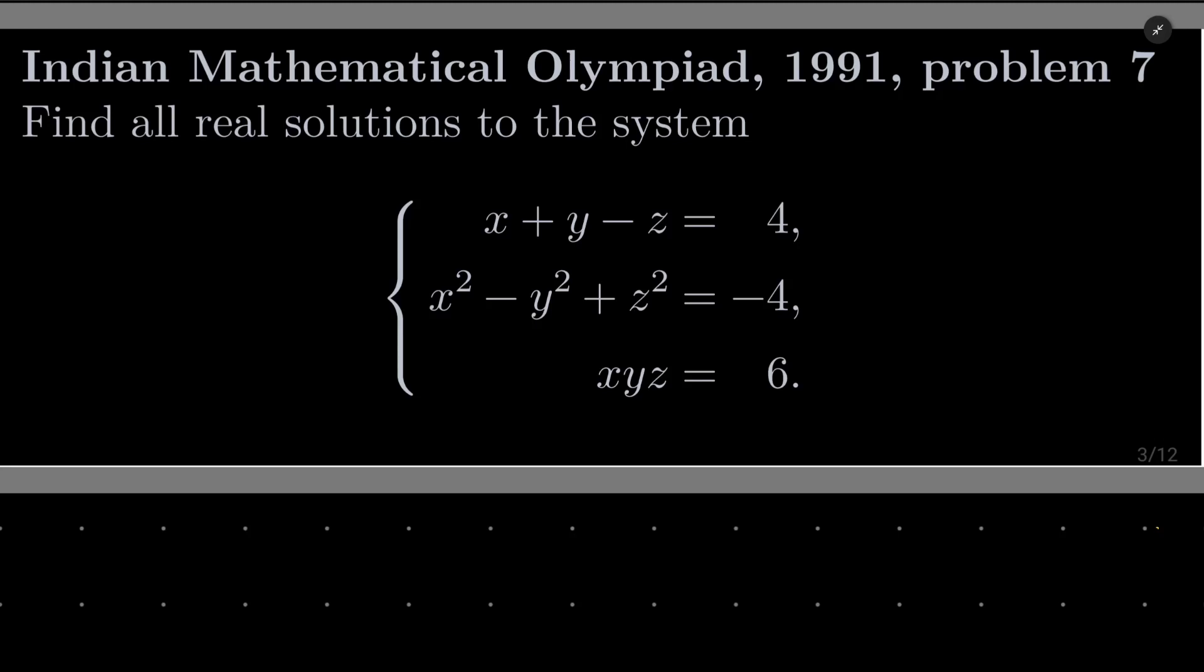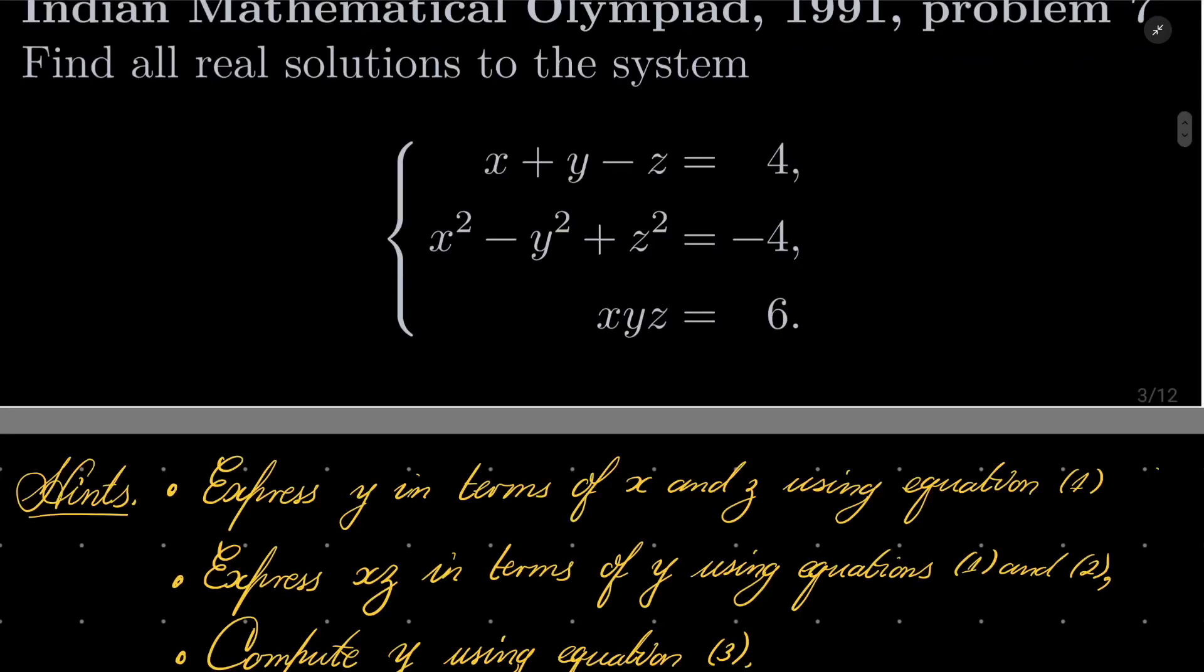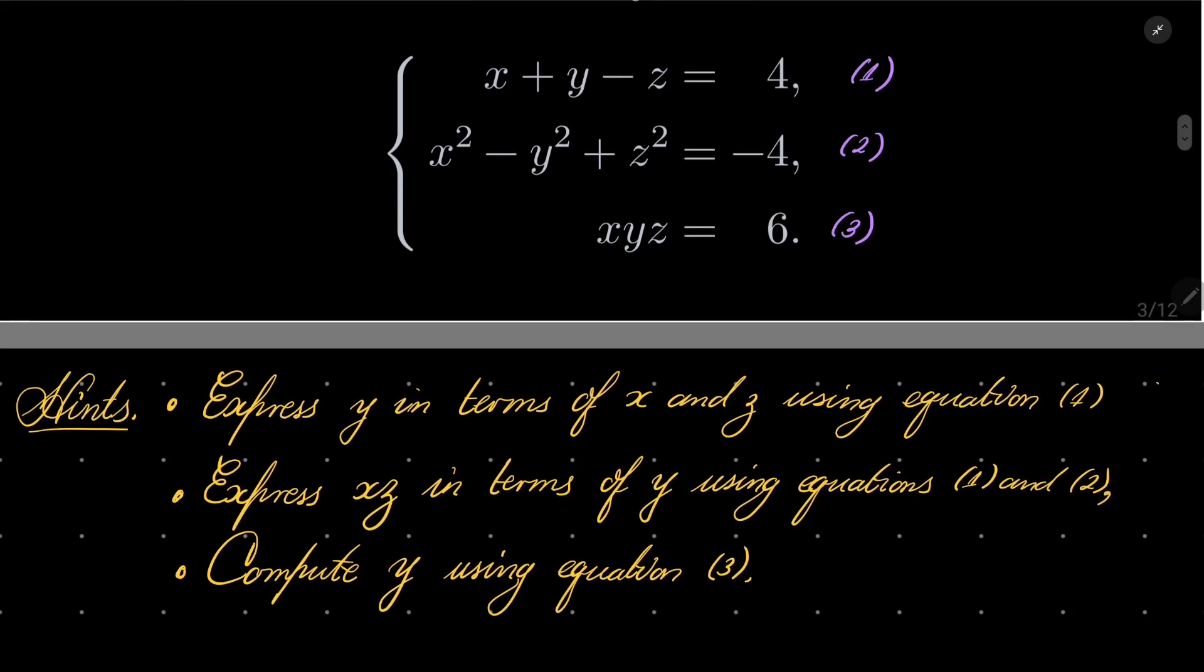It's a rather easy problem. Here are my hints. First, let's enumerate our equations 1, 2, 3. Using equation number 1, you can express y in terms of x and z, then you can express xz in terms of y using equations 1 and 2. Finally, after setting xz as some function of y, you can solve the very last equation to get y, and then compute the remaining two variables.